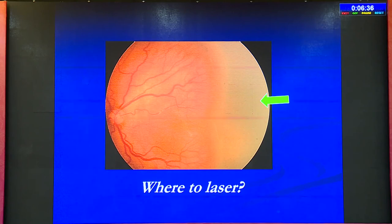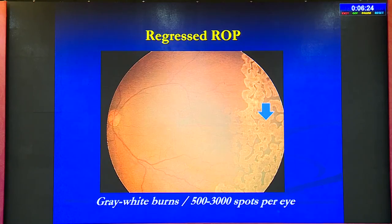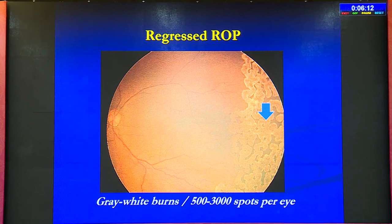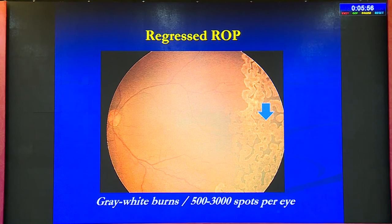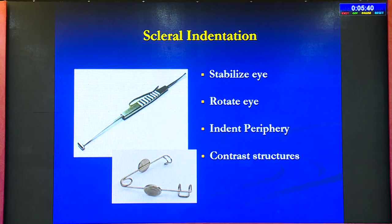Where should you laser? The avascular retina — marked by the green arrow — is where you must laser, because that is where the ischemic stimulus is coming from. You don't laser on the ridge itself, as that risks bleeding or further traction and proliferation. This is how typically regressed ROP looks after laser. For ROP, you give semi-confluent laser because the more ischemic retina you ablate, the better the disease comes under control. There is no exact number of burns — the idea is to ablate the peripheral retina. It depends on the individual performing the laser.